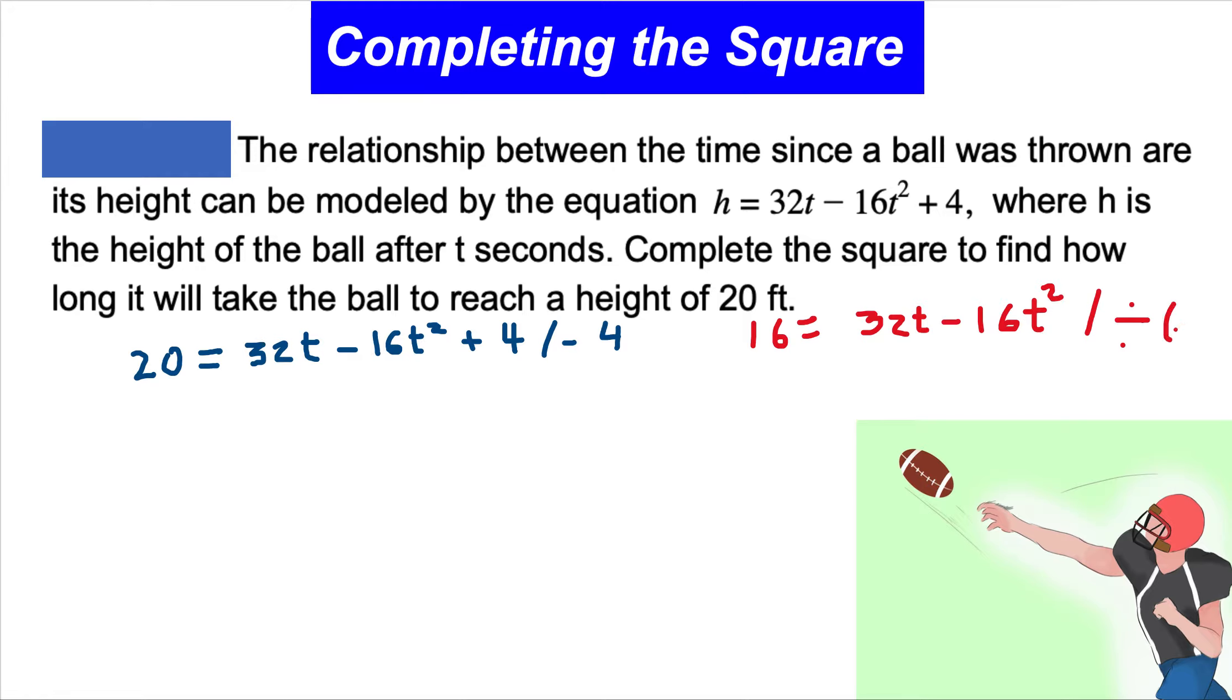If we divide everything by -16, this equation will look different. -16t² divided by -16 gives just t². I'm going to switch the sides of the equation, putting what's on the right on the left and what's on the left on the right.